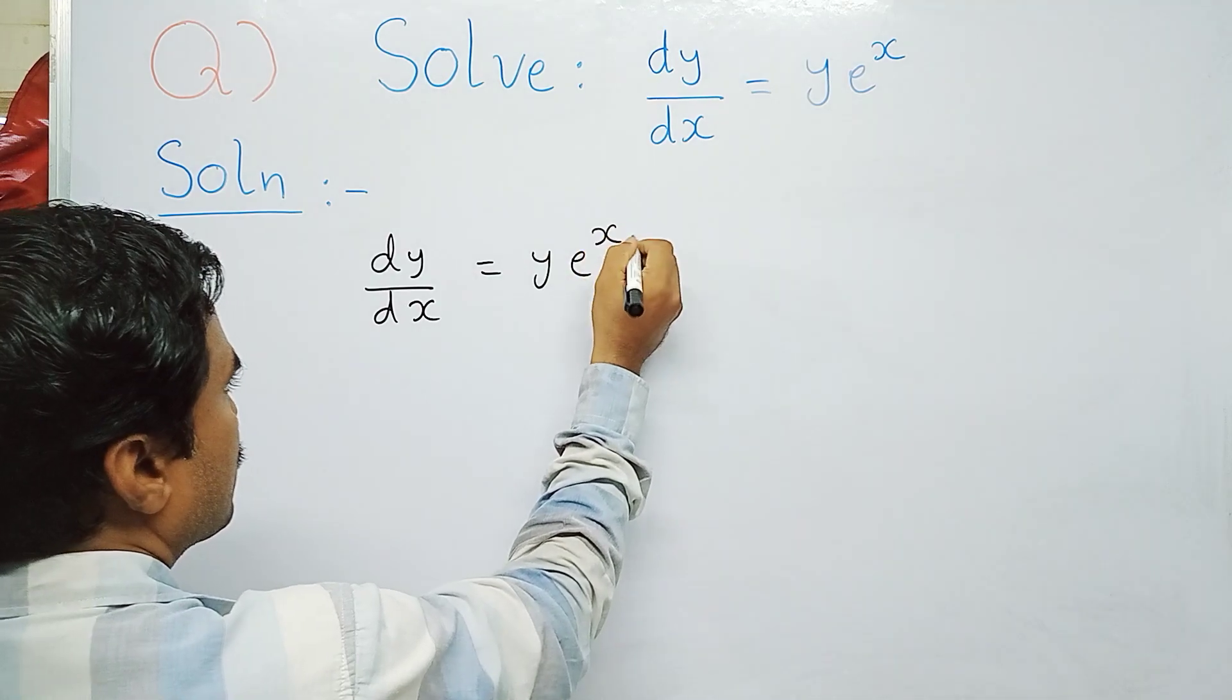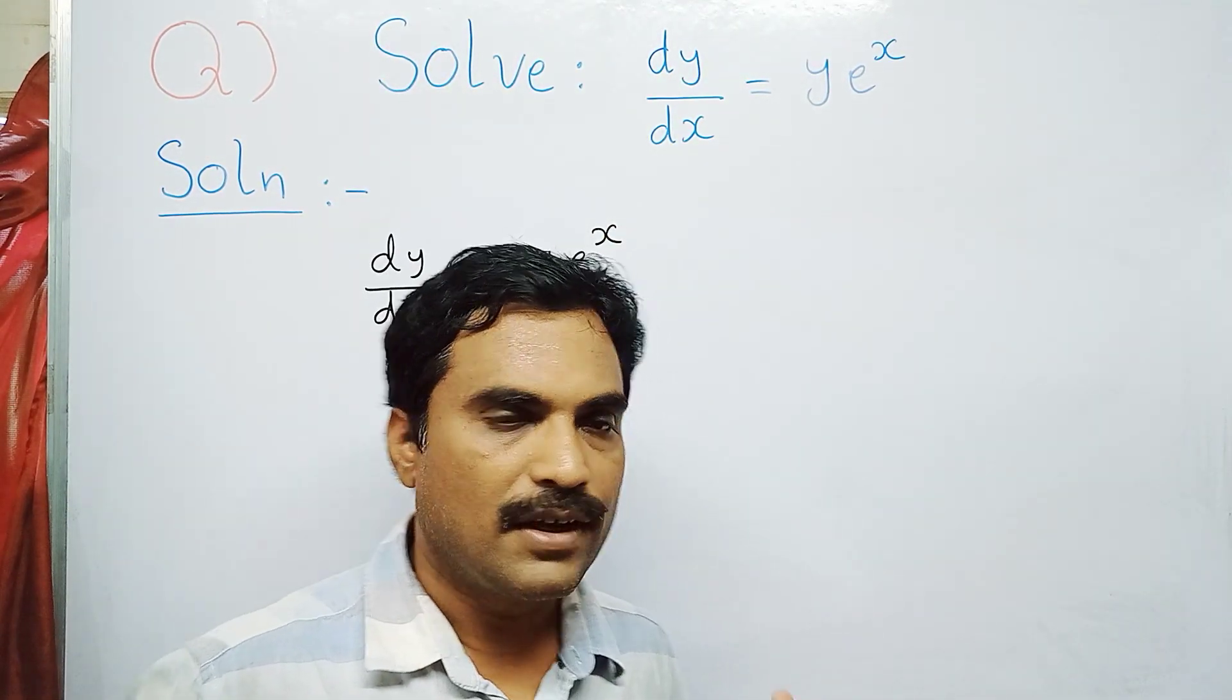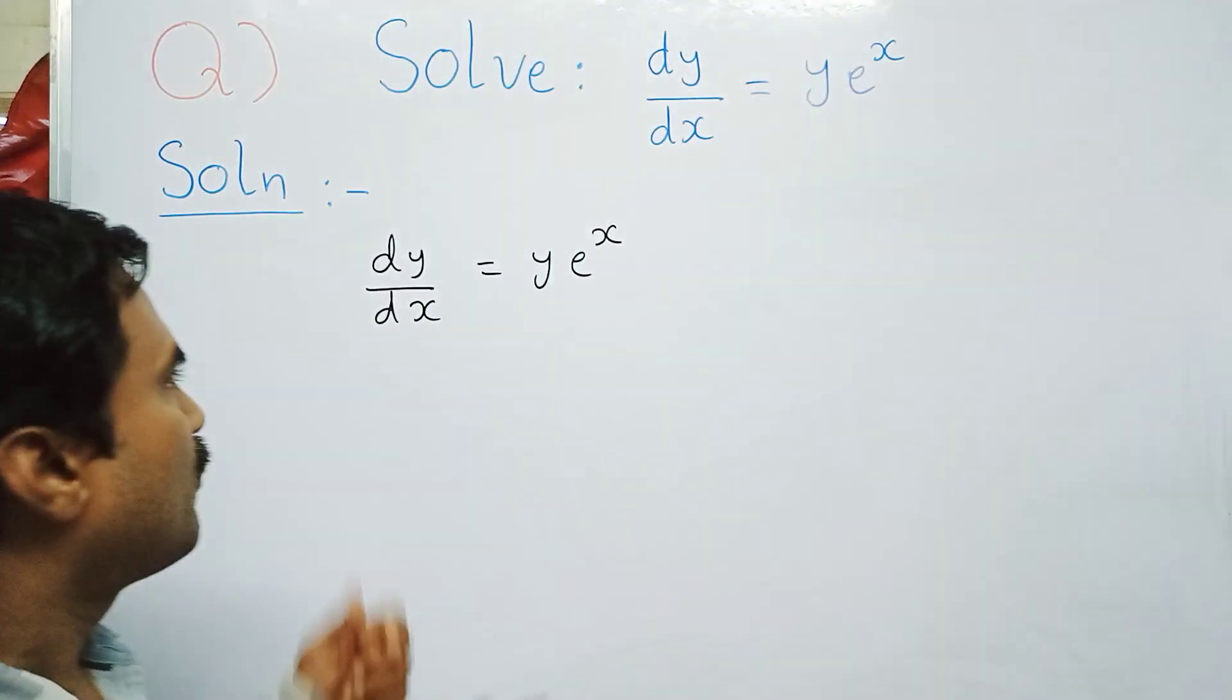If you observe the right hand side here, y is there and e^x is there. So y is a function of y and e^x is a function of x.